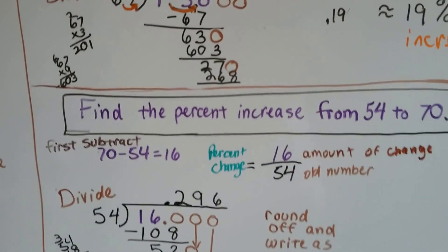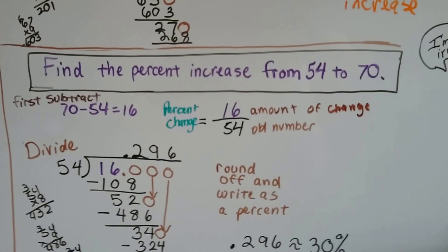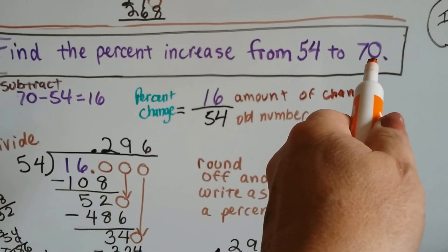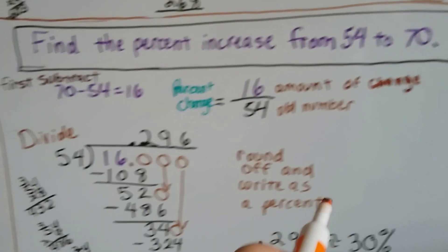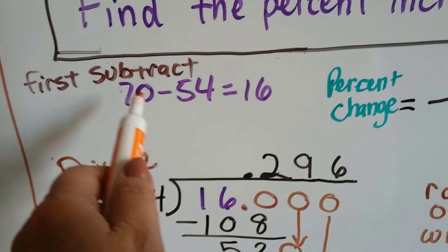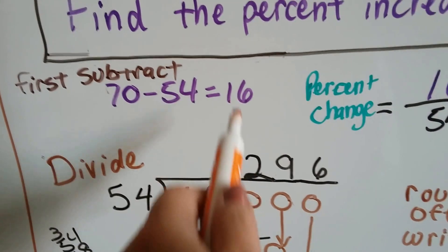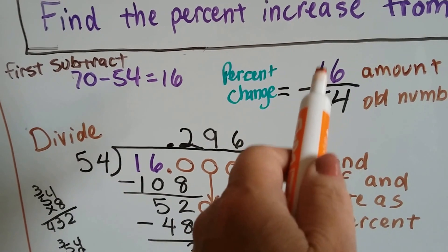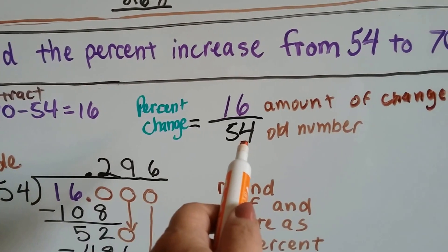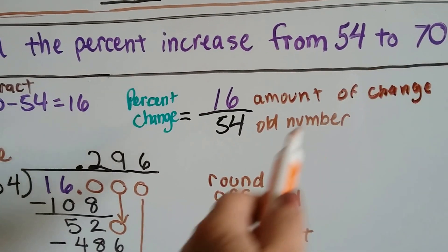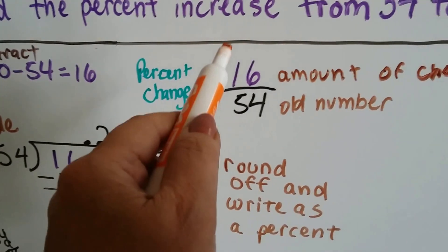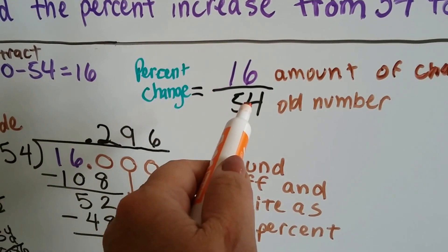Let's try it one last time. We're going to find the percent increase from 54 to 70. There's no decimals. The first thing we do is we subtract. We take the 54 from the 70, and we get 16. That's going to be as the numerator, and the old number, the 54, is going to be the denominator. That's going to help us find the percent change.